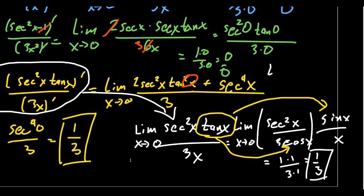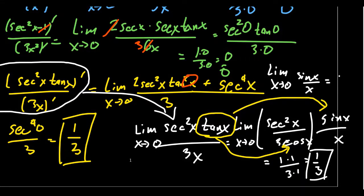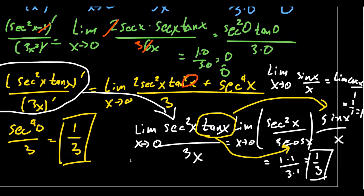If you ever forgot that the limit as x approaches zero of sine of x over x equals one, you could use L'Hôpital's rule since it has the indeterminate form zero over zero. Taking the derivative gives the limit of cosine x over one, which equals one over one, equal to one. We originally proved this using the squeeze theorem. By remembering limits we've already computed, like sine x over x going to one, we can avoid some derivative calculations. L'Hôpital's rule is not a silver bullet — it's just one more tool in our box alongside the other techniques we've developed.